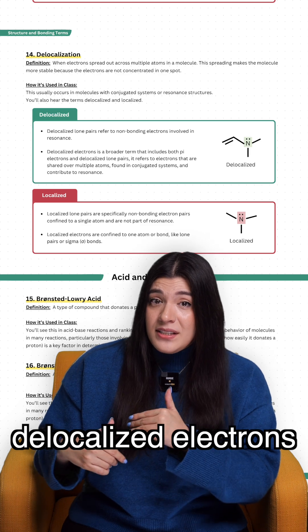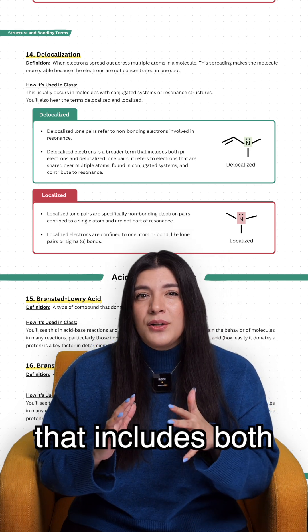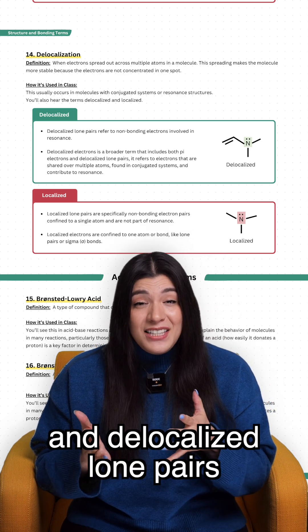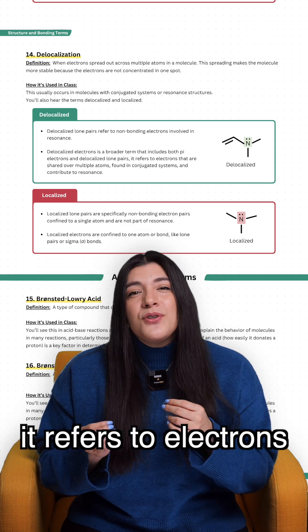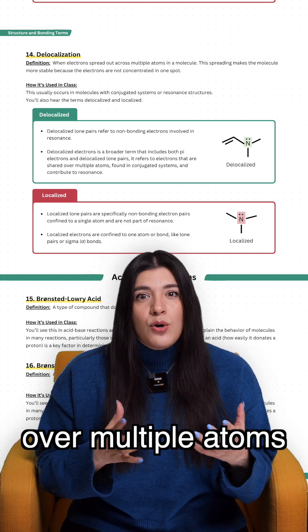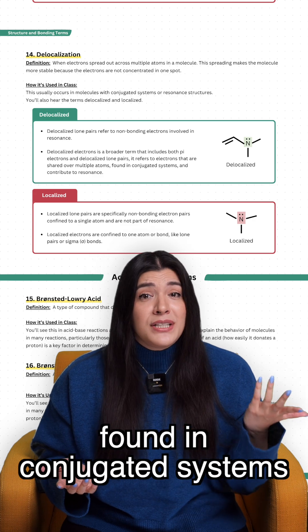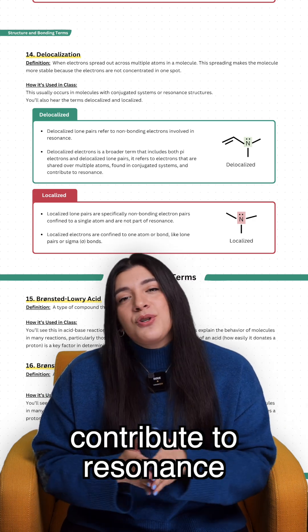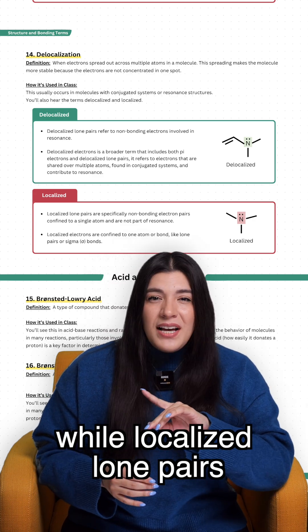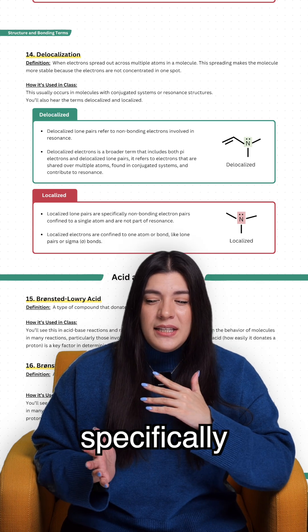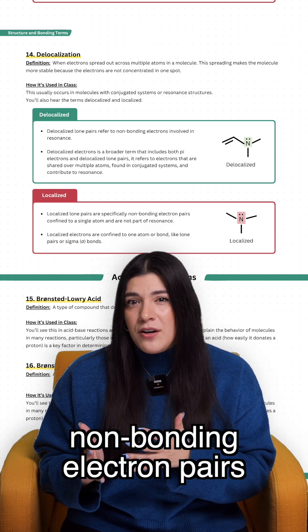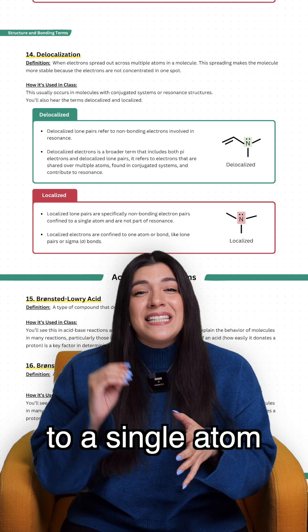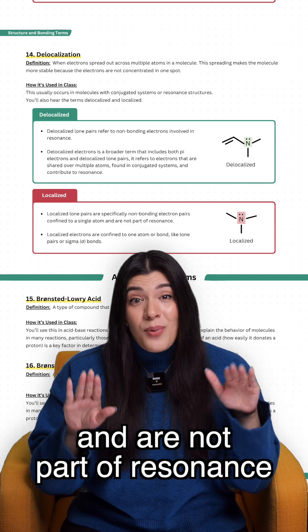Delocalized electrons is a broader term that includes both pi electrons and delocalized lone pairs. It refers to electrons that are shared over multiple atoms found in conjugated systems and that contribute to resonance. While localized lone pairs are specifically non-bonding electron pairs that are confined to a single atom and are not part of resonance.